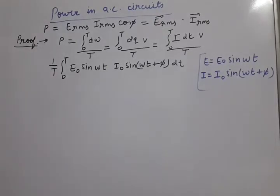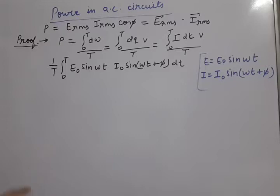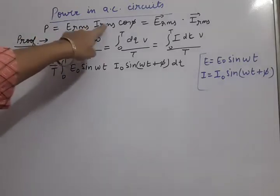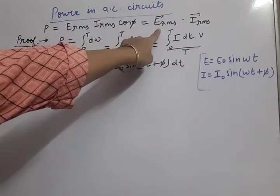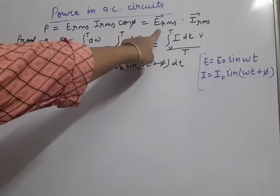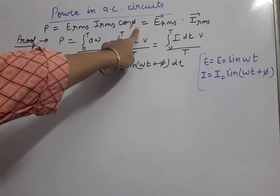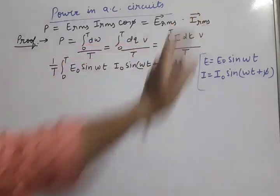Good morning students. Today we are going to understand the power in AC circuits - its derivation. The formula of power in any AC circuit is E_RMS × I_RMS × cos φ, or in dot product form we can write it as A·B = AB cos θ. That's why it is E_RMS vector dot I_RMS vector.